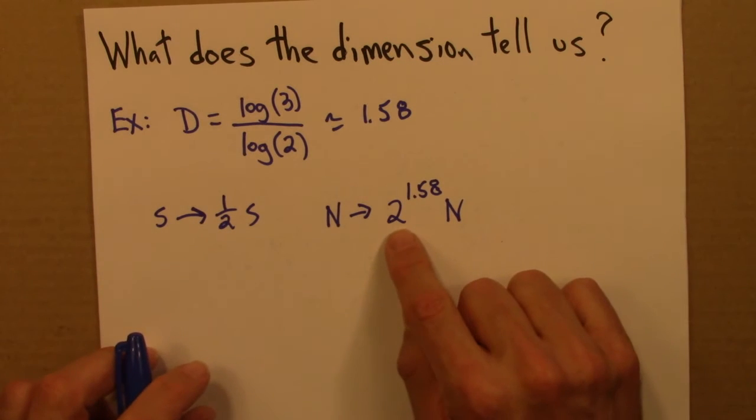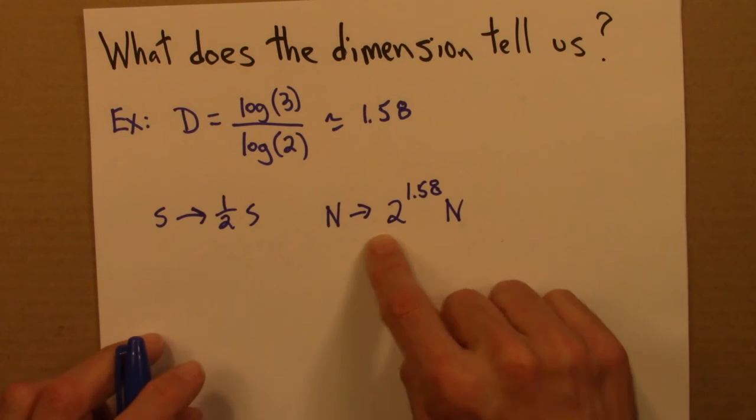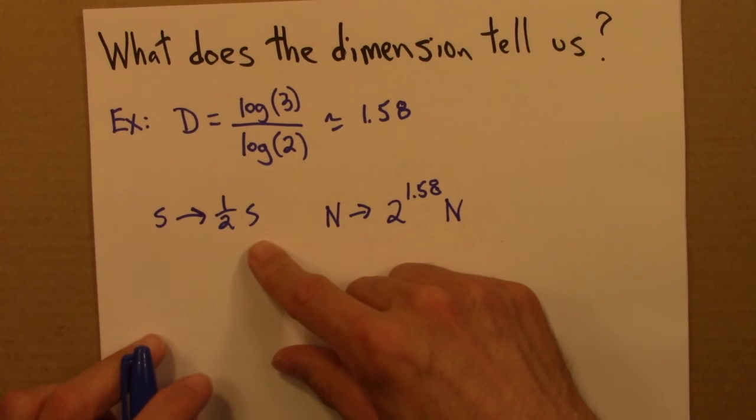And of course, we would only expect this to be accurate if S was already pretty small, small compared to the size of the shape.